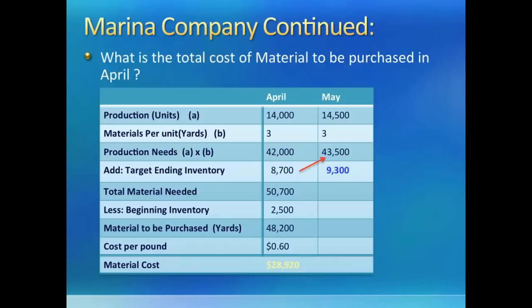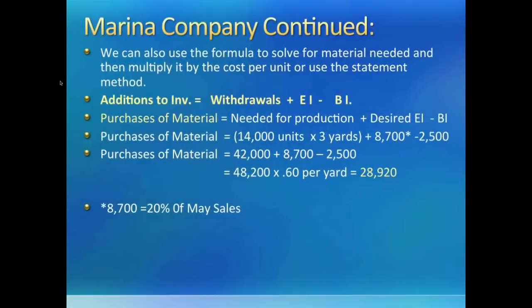We subtract beginning inventory to figure out how much material should be purchased. When we have 28,920 yards, we are done. Remember that in a T-account for materials, we use the equation to calculate what gets used in production — we are using exactly the same formula here except we are solving for purchases. We have raw material purchases in yards of 48,200 times the price per yard to get the cost of material to be purchased in April.